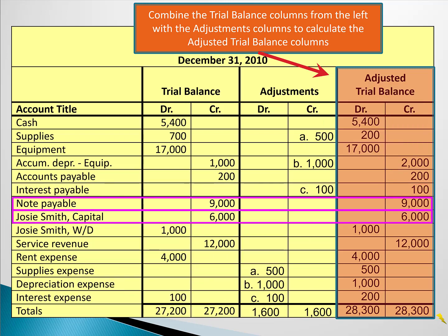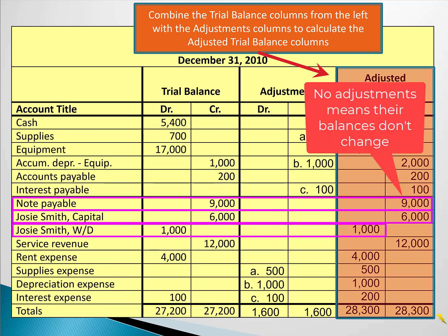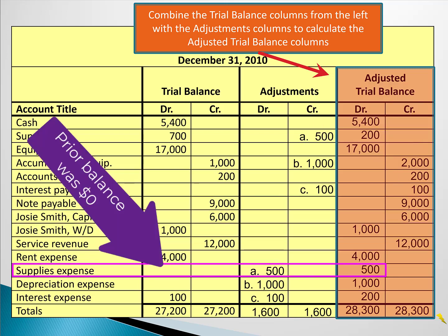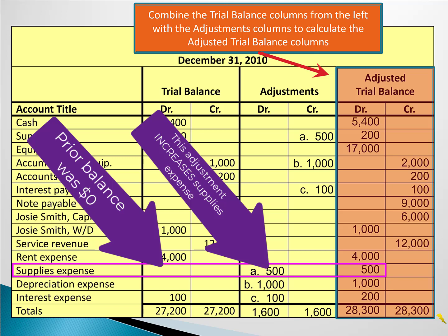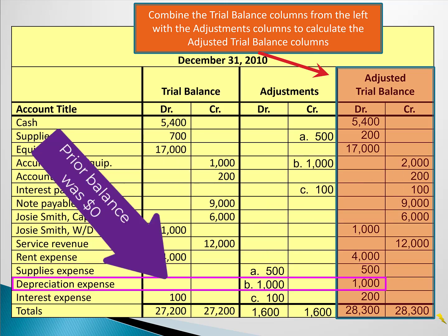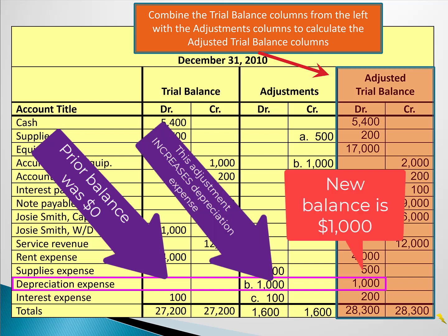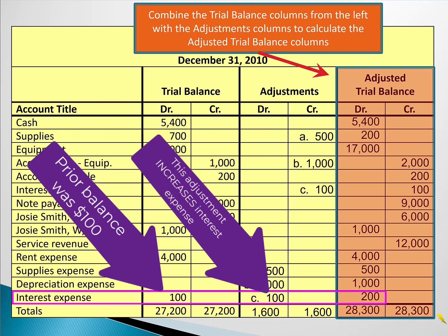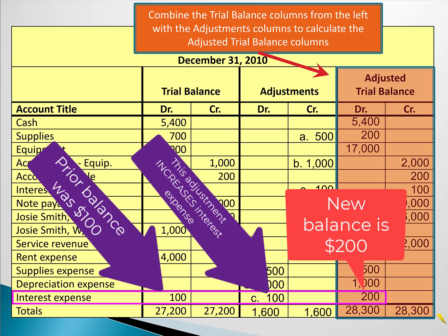Interest payable was zero and increased by a hundred, so the new balance is 100. Notes payable, capital, withdrawals, and service revenue were not adjusted, neither was rent expense. Supplies expense was zero and increased by a 500 debit, so the new balance is 500. Depreciation expense was zero and increased by 1,000, giving a new balance of 1,000. Interest expense had a hundred dollar balance on the trial balance and increased by another hundred, so the new balance is 200.